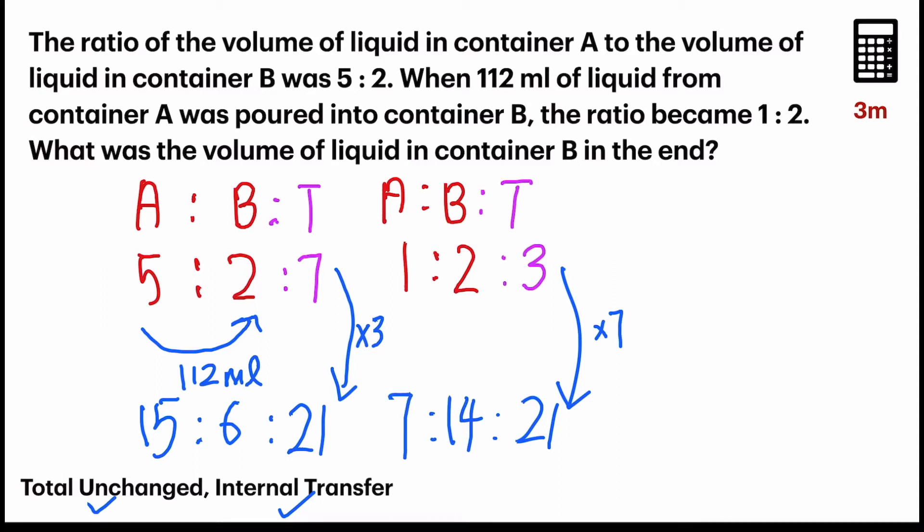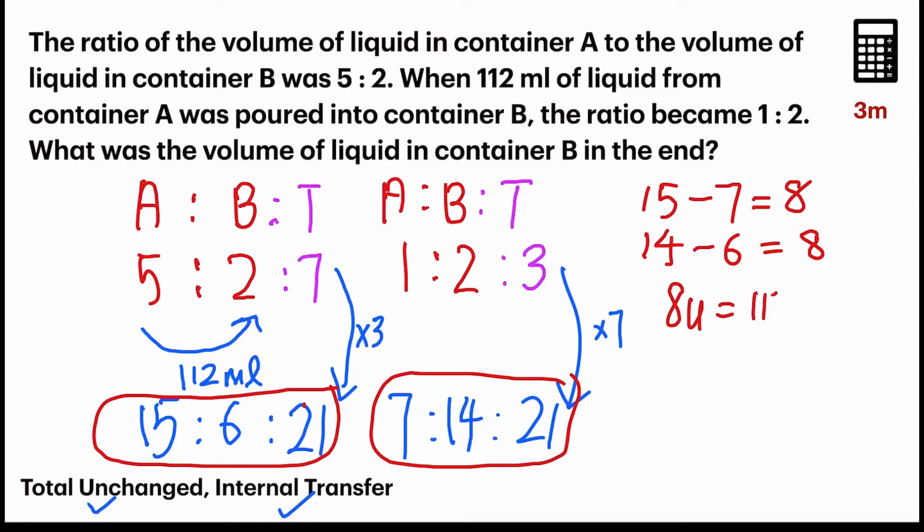Now, with that two sets of ratio, let's do a little bit of analysis. Let's take a look. 15 units in A at first, but it became 7. Why? Because there was an internal transfer of 112 milliliters. So, if I were to take 15 units minus 7 units, I see a change of how many units? 8 units. Let's see if it's true for the other container. For container B, there were 6 units at first, but it became 14. Because water from container A was transferred into B. So, let's see. We'll take 14, that's after, minus 6. How I got the number? It's from here and here. And I also get 8. So, for sure, I know that the internal transfer, that 8 units of movement is equals to 112 milliliters.